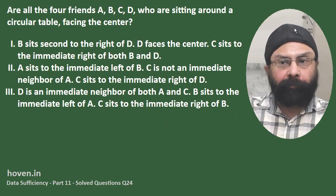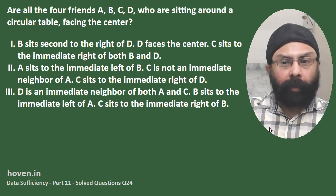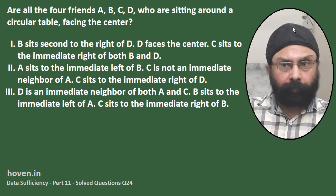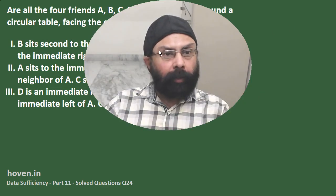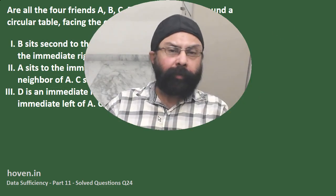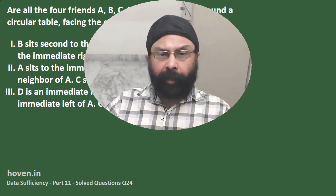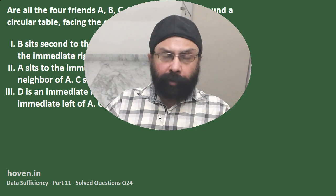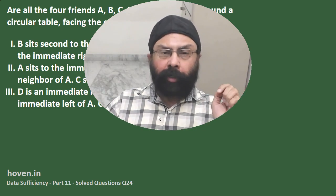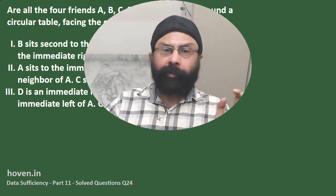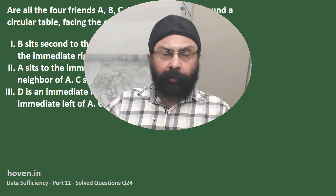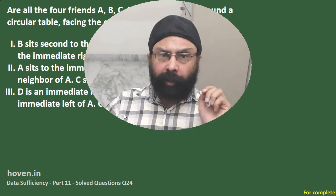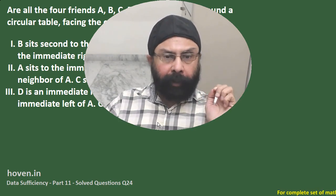Let us take up another data sufficiency problem. We have to determine whether four friends are all facing the same direction or not. As usual, we have to decide based on three statements. We will try the first statement, then the second, then the third, and if they don't succeed individually, then we will try their combinations.